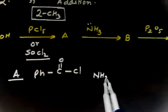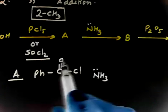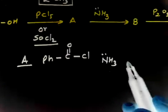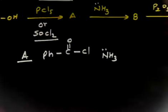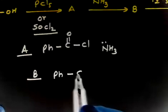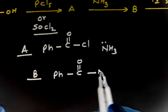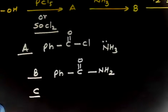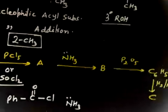NH3 will act as a nucleophile. This will attack, this opens up, returns back, Cl goes. So finally we'll have an amide. B will be an amide: Ph-CO-NH2. The third step is P2O5.